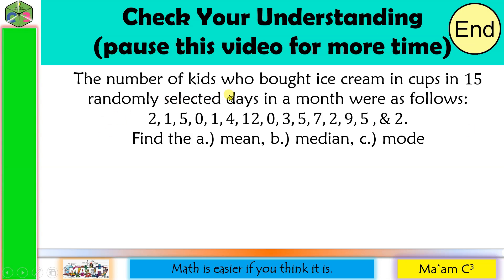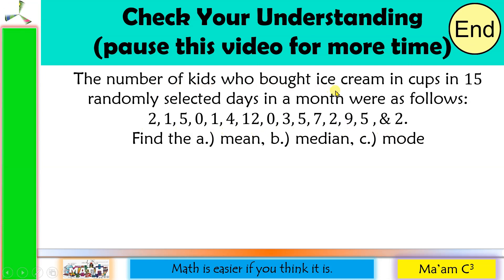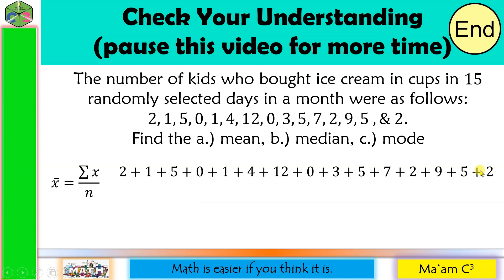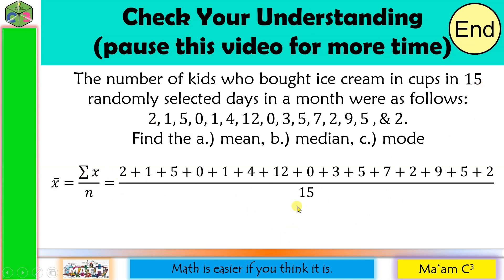Now let us answer the practice problem. The number of kids who bought ice cream in cups in 15 randomly selected days in a month were: 2, 1, 5, 0, 1, 4, 12, 0, 3, 5, 7, 2, 9, 5, and 2. Find: A) the mean, B) the median, and C) the mode. Since these are 15 randomly selected days, this is a sample. The formula is x-bar equals summation of x over n. Adding all values and dividing by 15 gives x-bar equals 3.87.